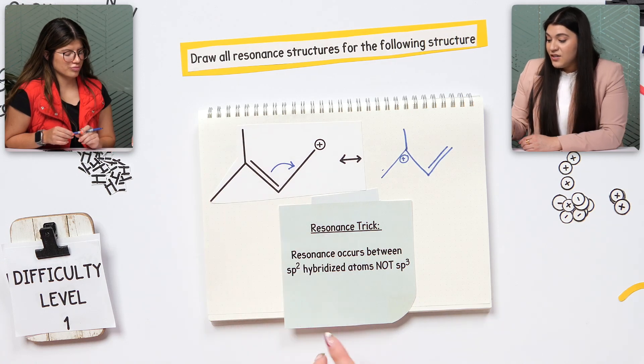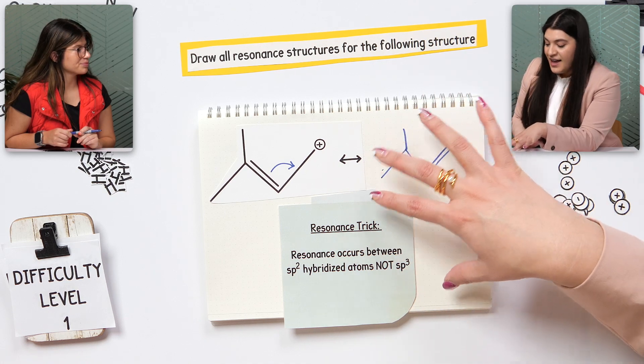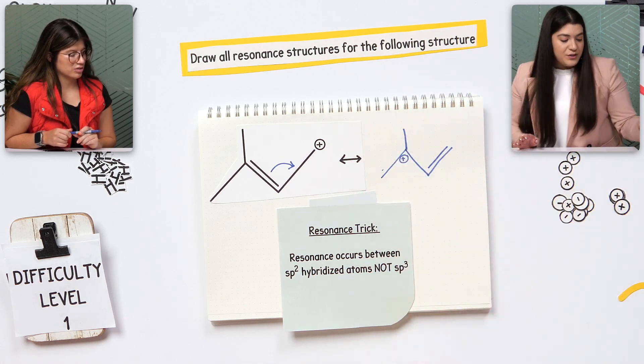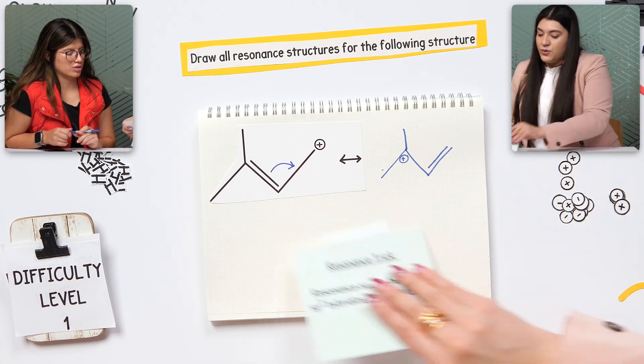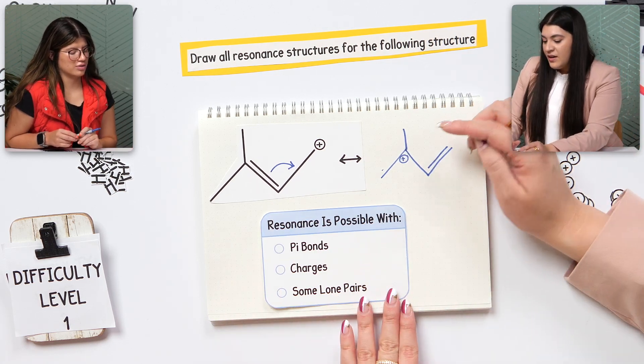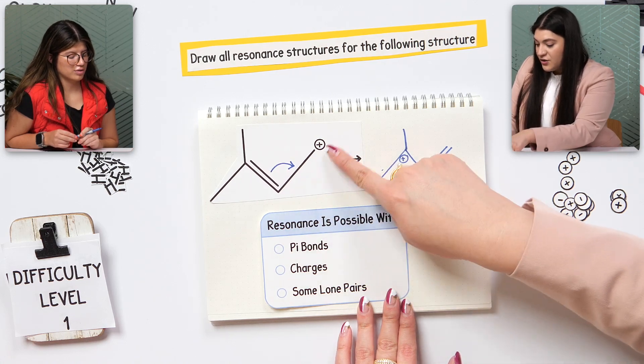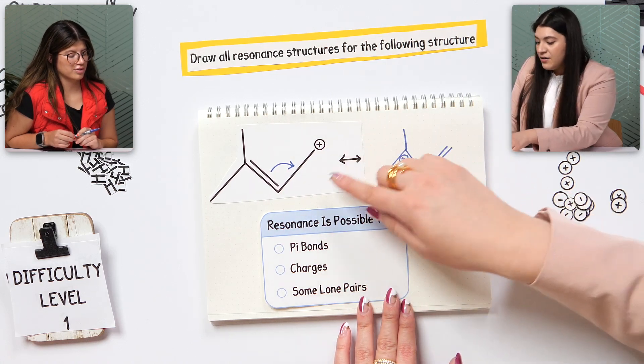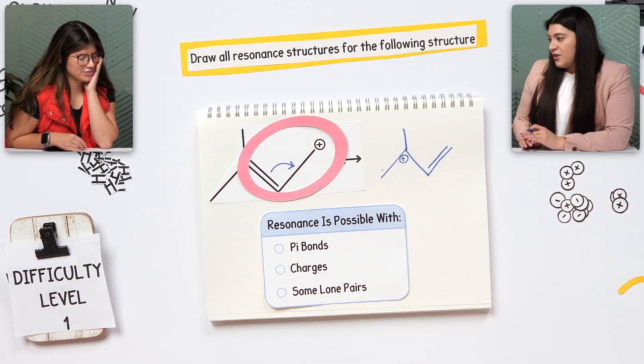Same thing here. So another cool thing is being able to see where resonance is actually going to happen. And that goes back to what I just mentioned, which was what's possible. So I know that the pi bond, that's where resonance is going to happen, charges. If there were lone pairs, then it would also be there. So this is everywhere that resonance can occur.